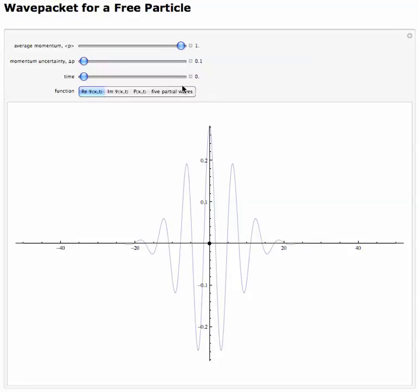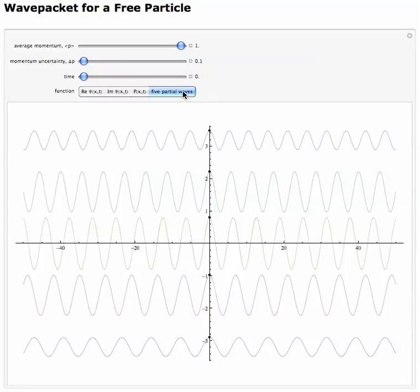Now, you can actually, this wave packet is actually composed of five, of many different partial waves, so many different individual waves that are summed together to produce this sum. And here are five of the waves, okay, right there.